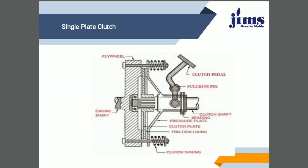As you see at the top of the diagram, there is a flywheel which is connected to the engine shaft. At the bottom of the diagram is the clutch spring. This spring is also present at the top. On the right side, you see the clutch pedal, which is pressed by your foot, and which is connected to the fulcrum pin — that is also connected to the clutch shaft. In between, you see the pressure plate, clutch plate, and friction lining.